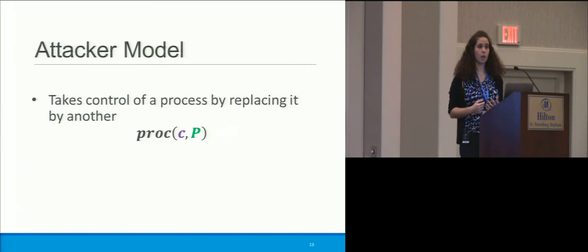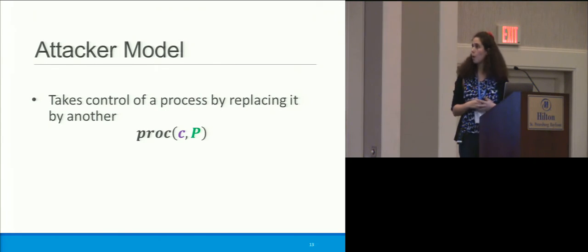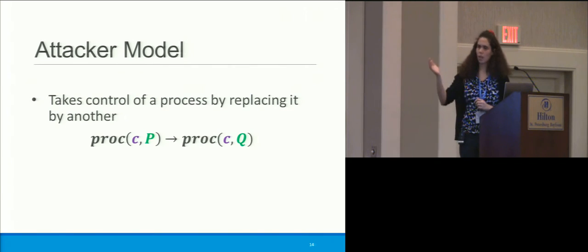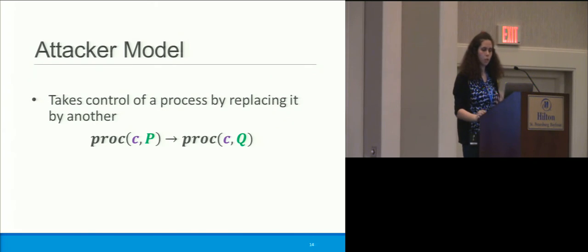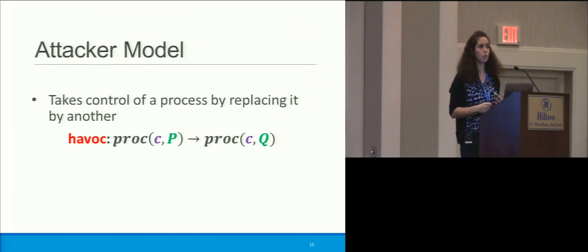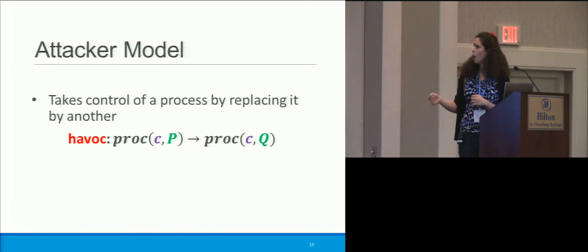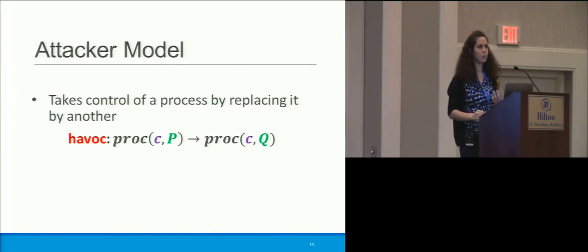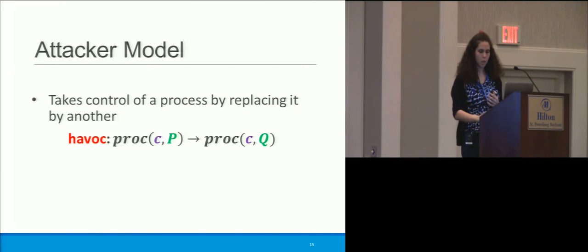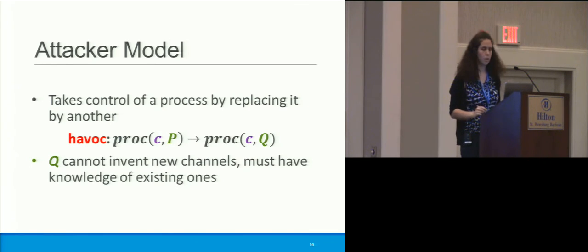It seems silly to talk about monitoring before talking about an attack model. I consider an attack when a process is taken over by another process — replaced by some rogue process. I have some process 'proxy P' providing a service along channel C, and then all of a sudden it becomes 'proxy Q.' This state transition we call 'havoc,' and havoc transitions are not well-typed — this is a transition to ill-typed code. One important limitation on the attacker: the channel C remains consistent, because our attacker must have some knowledge of the existing channels. They can't forge new channels — they must know about existing ones.